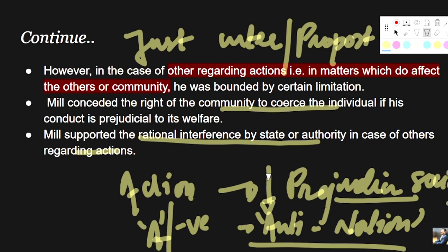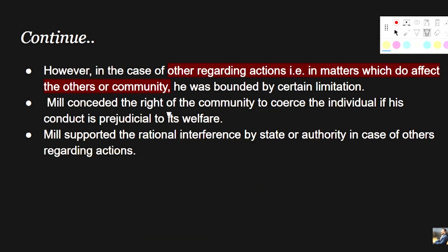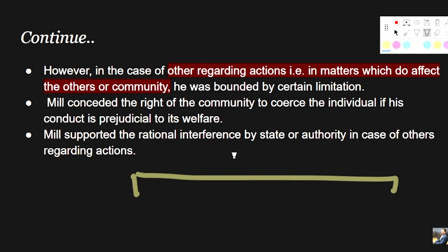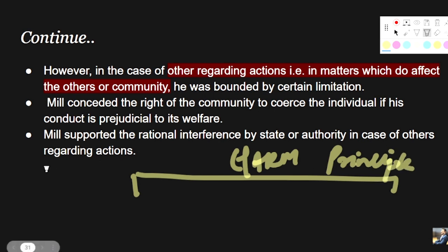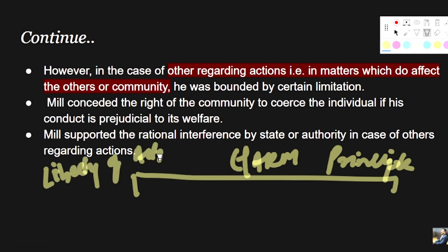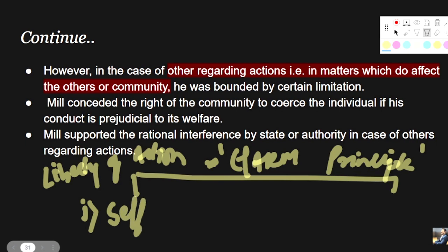So this is the basic idea of Mill when it comes to self-regarding action and other-regarding action. To summarize the harm principle: Mill divided actions into two parts. Self-regarding action is that action which only affects the individual — it has nothing to do with society, like what we eat or how we sleep. But there are also other-regarding actions which have either a positive or negative effect on society, for example what opinion we hold about certain national things like anti-nationalism.